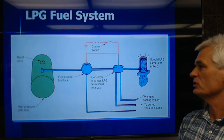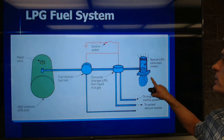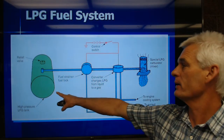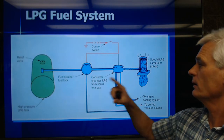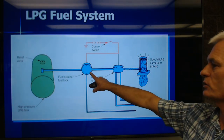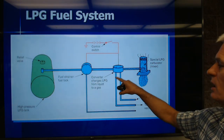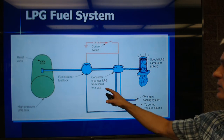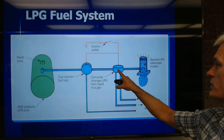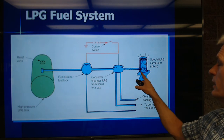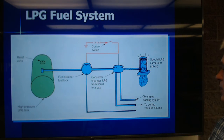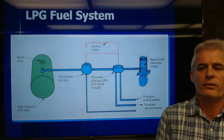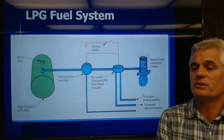This diagram shows an LPG system — it has something that looks like a carburetor, a high-pressure tank, a fuel strainer, a fuel sock, and some sort of a converter that lets us go from liquid to gas. It's going to be a restriction and the fuel goes in as a vapor. It gives you an idea of a really simple system.